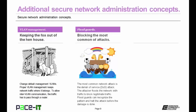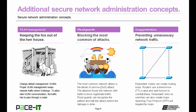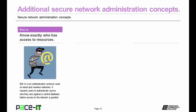The attacker tries to flood the network with traffic to block legitimate traffic, but flood guards can recognize the pattern and halt the attack before the damage is done. Then there's loop protection — preventing unnecessary network traffic. Redundant routes can create routing loops; routers use a time-to-live value and split horizon to combat routing loops. Redundant links on switches can also create loops within a switch network. Spanning tree protocol, or STP, will negate these loops from ever occurring. If possible, you should implement 802.1x, which helps you to know exactly who has access to your networks.